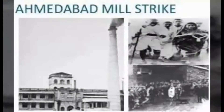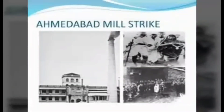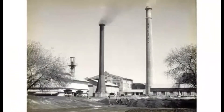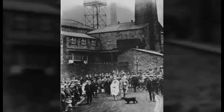Workers Movement at Ahmedabad: During the First World War, there was great inflation. Mill workers demanded a rise in salary, but the mill owners rejected this demand. As per Gandhiji's advice, the workers went on hunger strike. Finally, the mill owners had to back off and the salary of workers was increased.